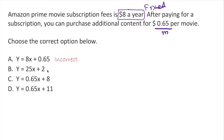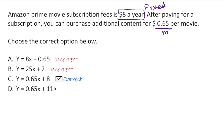The next option has 25x, but the problem doesn't have 25x, so this is completely incorrect. The next option has $0.65 times x — we don't know how many movies, so x is the number of movies — plus $8. That is actually correct. So that works — that's the right answer.